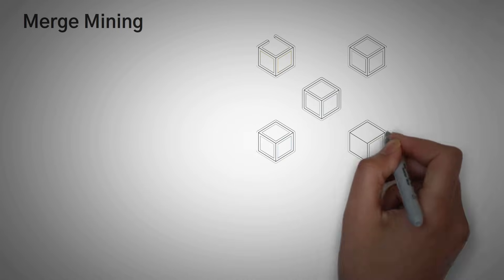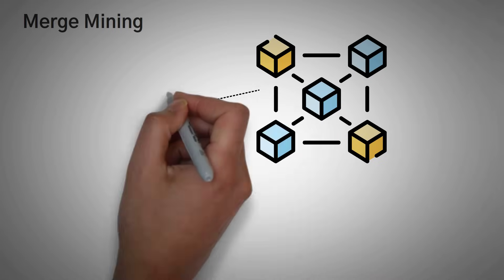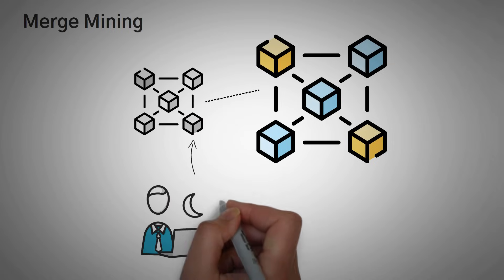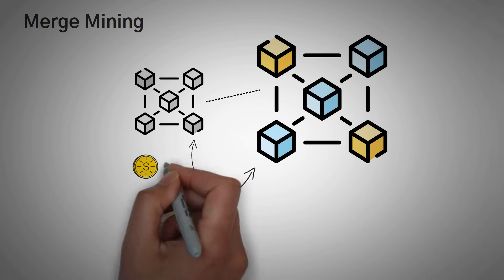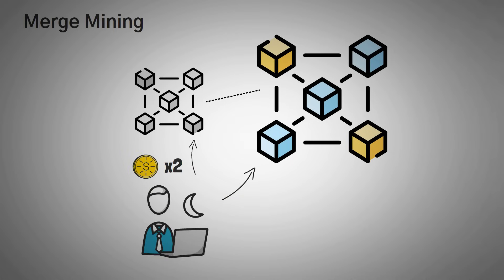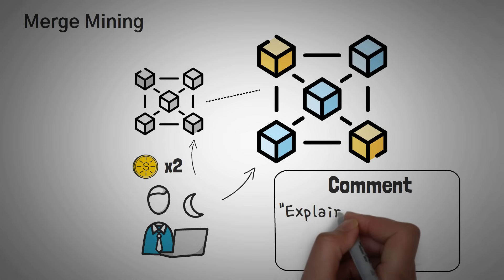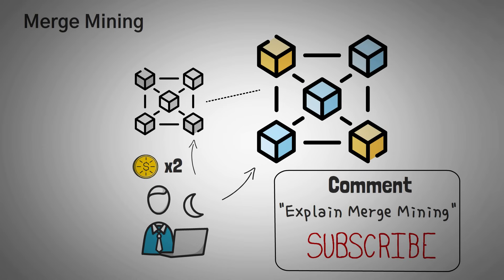Now I want to talk about merge mining, because one of the cool things about sidechains is that many of them allow what is called merge mining. And this is a term that means you can mine or validate two blockchains at once, earning double the rewards with roughly the same amount of work. Now the technicals of how this works are outside the scope of this video, but you can leave a comment below if you want us to explain merge mining in a future video. Don't forget to subscribe either if we come up with it.